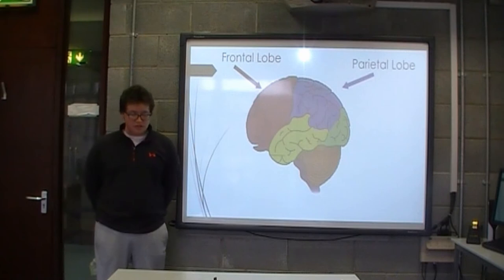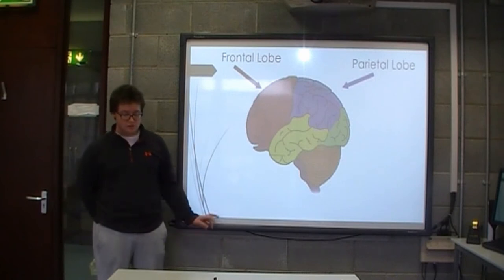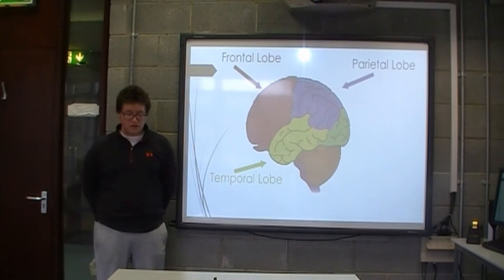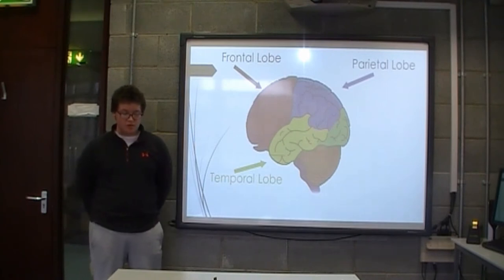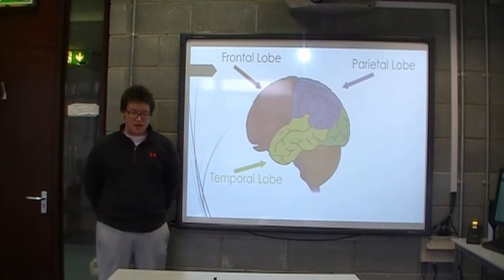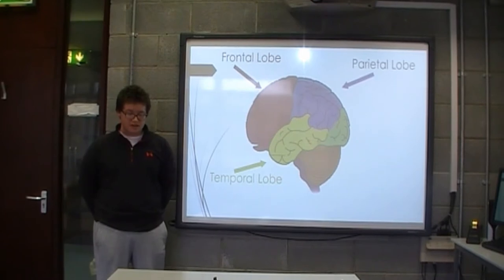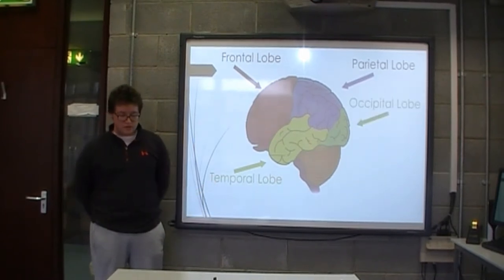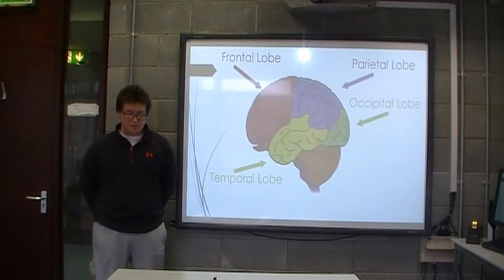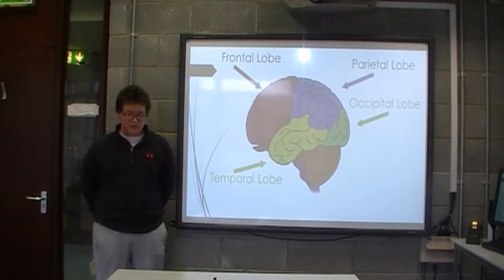The parietal lobe is associated with language and touch. The temporal lobe is associated with hearing, learning and emotions. It houses the primary motor cortex linked to the spinal cord. The occipital lobes are located in the posterior, which is the back part of the cortex, and they serve as the primary sensory system for vision.